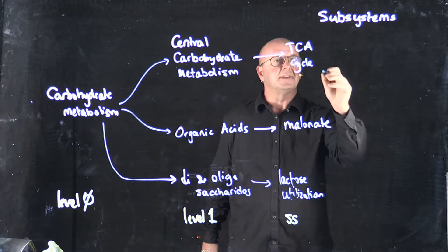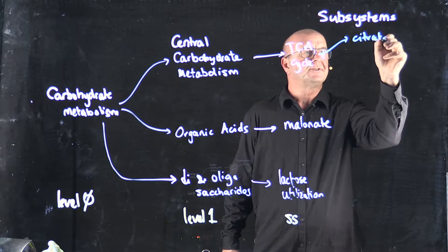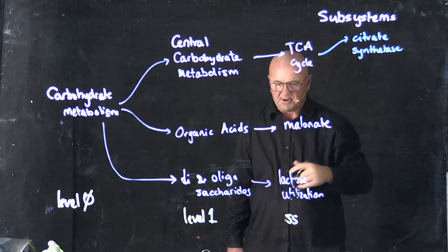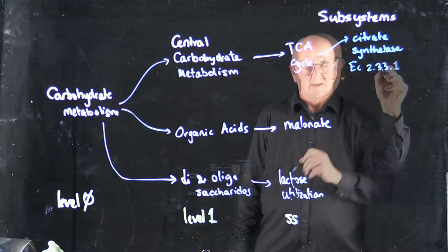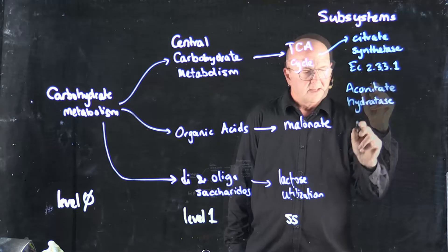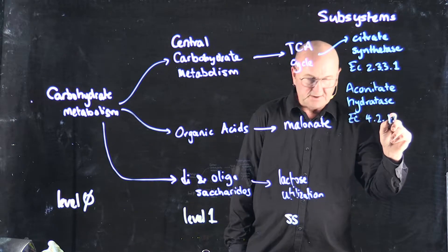For example, within the TCA cycle, we're going to have citrate synthetase, one of the critical enzymes of the TCA pathway, and it has an EC number associated with it. We might also have aconotate hydrase, and its EC number is 4.2.1.3.